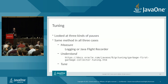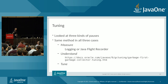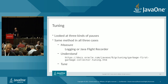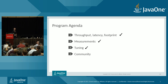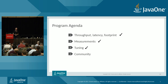We looked at the three kinds of pauses using the same method in all cases: measure using logging or Java Flight Recorder, understand how it works using this presentation or the tuning guidelines, then tune to work around the problem and achieve better performance. We've covered the three properties of throughput, latency, and footprint; how to get data from an instrumented JVM; and how to tune for lower latencies across young, mixed, and full pauses.